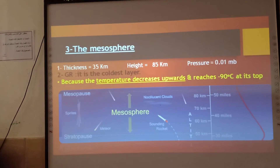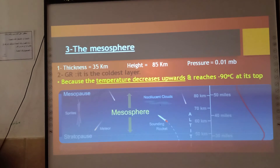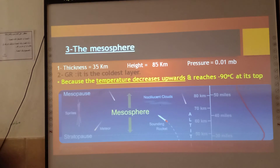The thickness of the mesosphere is 35 km and the height is 85 km. The atmospheric pressure equals 0.01 millibar.